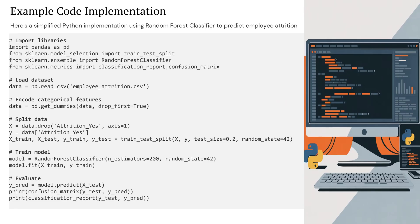Here is a simple Python example using a Random Forest classifier to predict employee attrition. We start by importing the required libraries and loading the dataset. Next, we encode the categorical features and split the data into training and testing sets. Then we train the Random Forest model, and finally evaluate it using a confusion matrix and classification report. It is a clean, quick, and practical way to predict attrition using supervised learning.